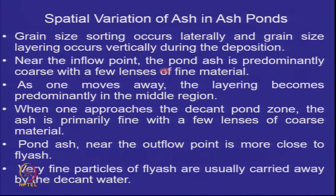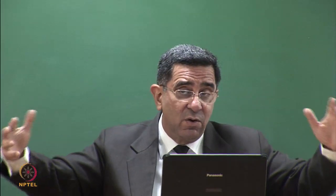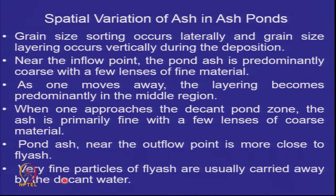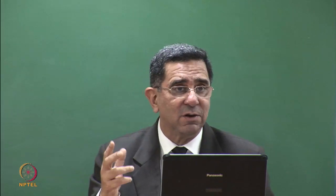Near the inflow point, pond ash is predominantly coarse with a few lenses of fine material. Moving further, layering becomes predominant in the middle region. Near the decant pond zone, the ash is primarily fine with a few lenses of coarse material — pond ash near the outflow point is more akin to fly ash. If there is insufficient retention time, the very finest fly ash particles are carried away by the decant water, leaving more inert material behind in the pond.